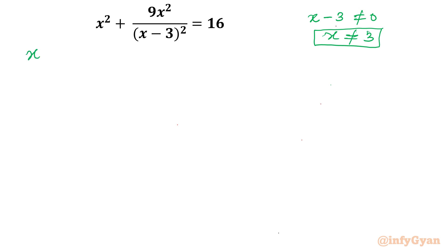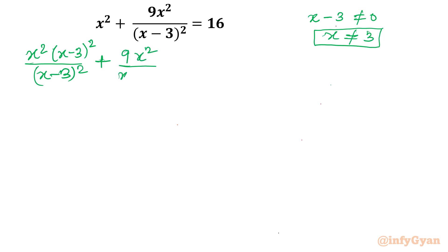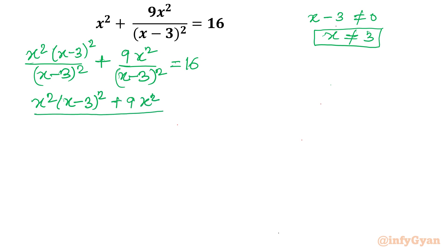I will consider the very first term and multiply numerator and denominator of the first term only with (x minus 3) whole square, keeping the remaining term as it is. This makes the denominator common. So I can write: x squared times (x minus 3) whole square plus 9x squared, all over (x minus 3) whole square, equal to 16.